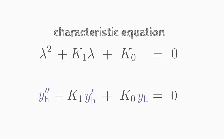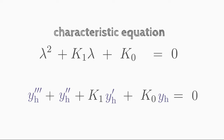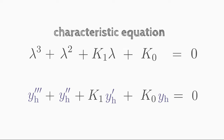You can set up the characteristic equation directly by looking at your differential equation without having to do all these steps. Compare your differential equation with the characteristic equation: the coefficient in front of lambda squared is in front of the second derivative of y (in this case, 1); the coefficient of lambda is in front of the first derivative of y (in this case, k1); and the coefficient k0 in front of y itself stands alone. By the way, if you had a homogeneous third-order differential equation, the characteristic equation would start with the cubic term, and so on.